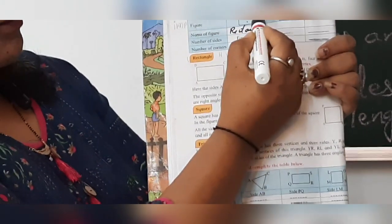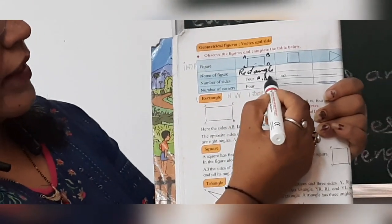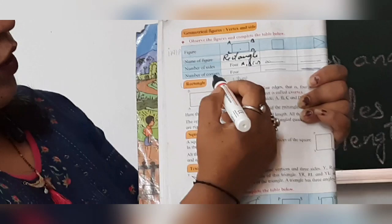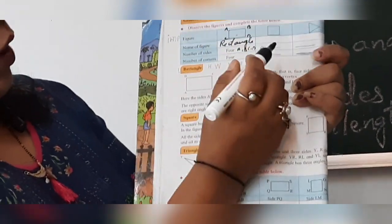It is a rectangle. What is it? It is a rectangle. So name of the sides. How many sides a rectangle has? One. A, B, C and D. Name of the sides? A, B, C and D. Name of the corners. How many corners it has? Four. Four corners.